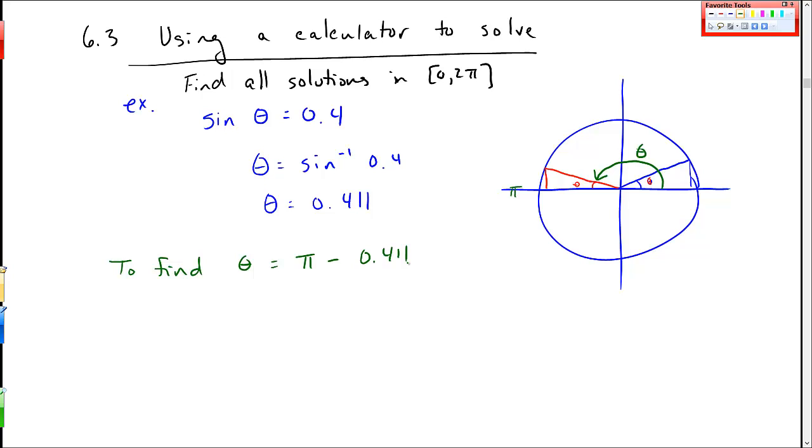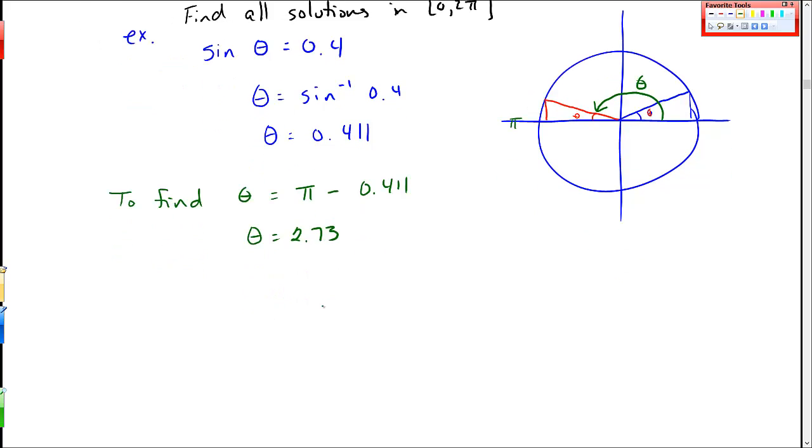And so π minus 0.411 gives me a second angle of 2.73. And these are my two solutions in 0 to 2π of this calculator problem.